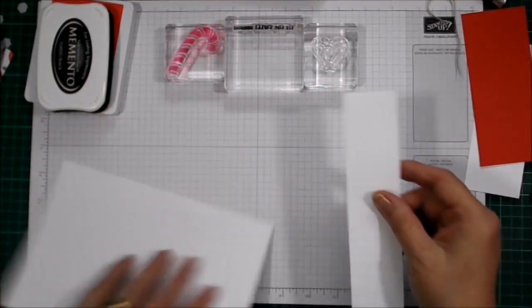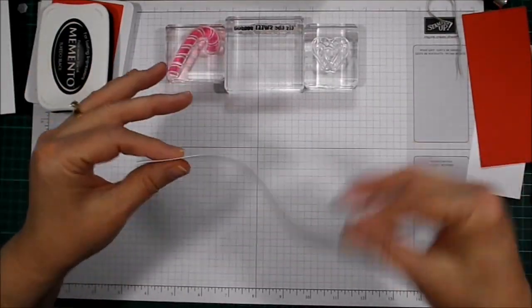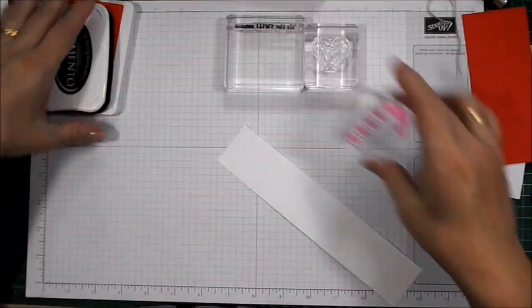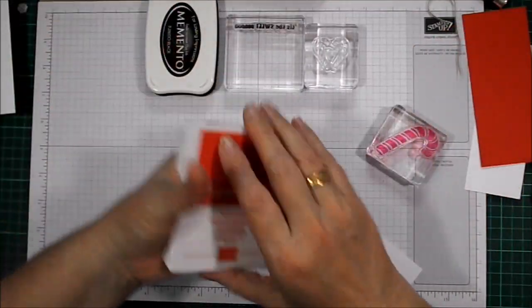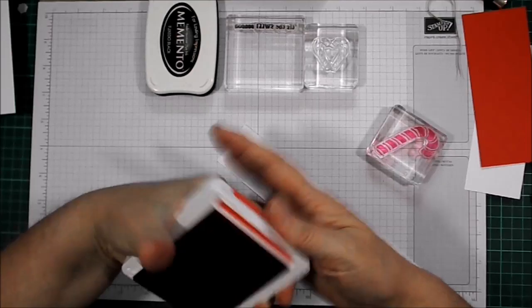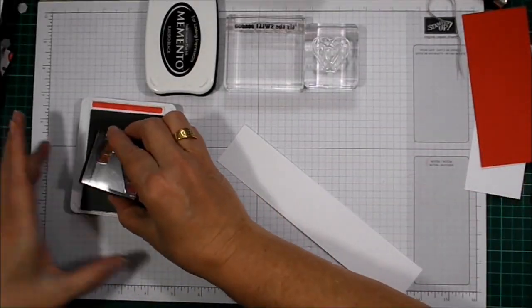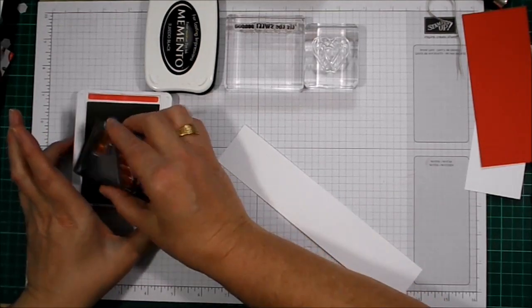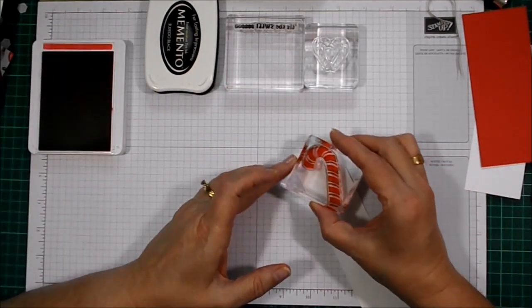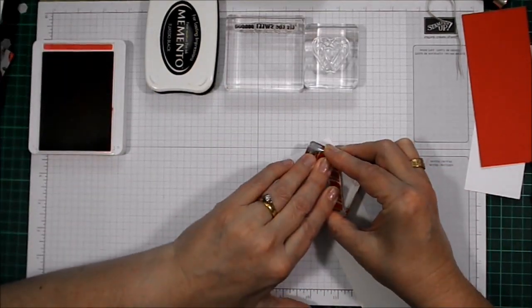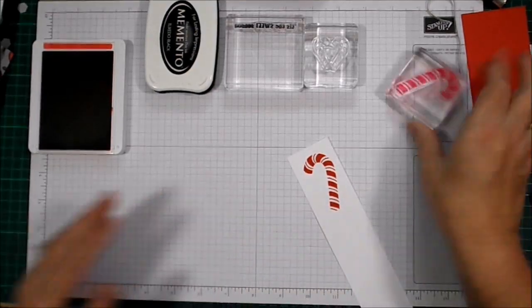We'll start off with this, a thin layering piece of Whisper White. As you'll all be aware, we have two different versions - there's the Thick Whisper White, which is ideal for making card bases out of or for making boxes and what have you, but we've also got the thin one, which is great for layering.